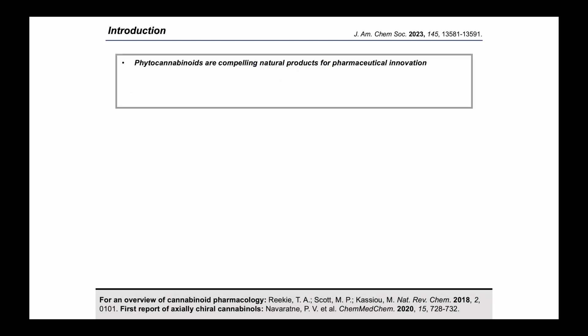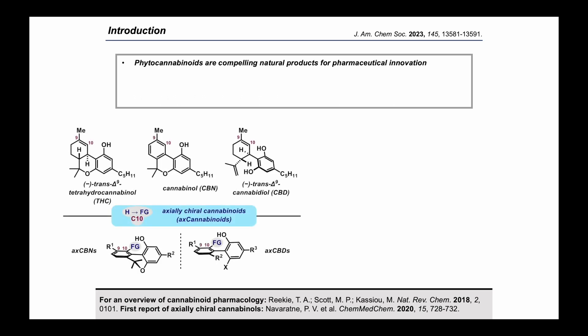Phytocannabinoids are the chemicals found in the cannabis plant. These natural products and their synthetic analogs are being explored as alternatives to highly addictive opioid pain medications, as well as treatments for neurological disorders, inflammation, metabolic disease, and cancer. The most well-known phytocannabinoid is tetrahydrocannabinol, or THC, which has been the subject of numerous total synthesis efforts and structure-activity relationship studies since the mid-20th century. In addition, cannabidiol, or CBD, has received a great deal of attention in recent years, and there have been many synthetic routes to this natural product as well.